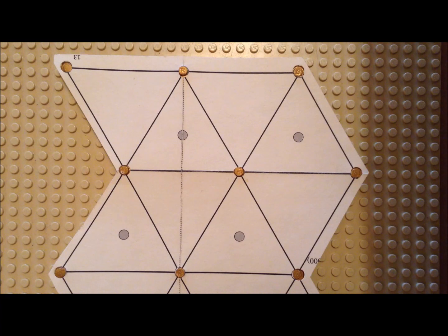Here we have the FCC 111 or the HCP 0001 surfaces. And we can clearly see the three-fold symmetry. Notice that the vector A1 is here, and the vector A2 has exactly the same length, but the two vectors are not perpendicular to each other.